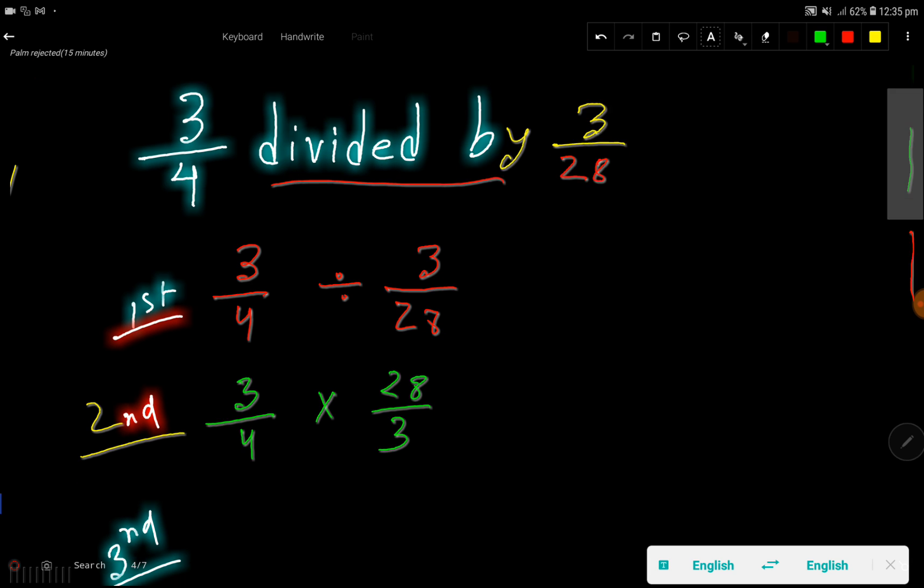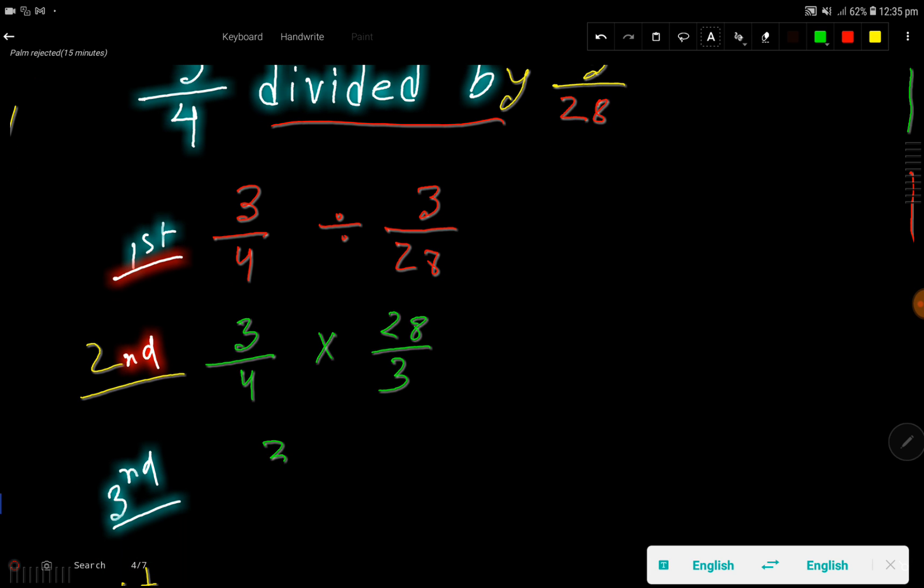So we are getting here 3 times 28 divided by 4 times 3. Look, if I multiply these 3 by 3 then I am getting 1, and if I divide this 3 by 3 I am getting 1, right?